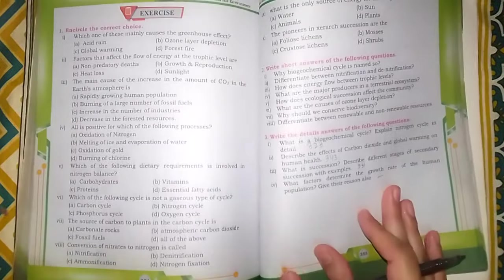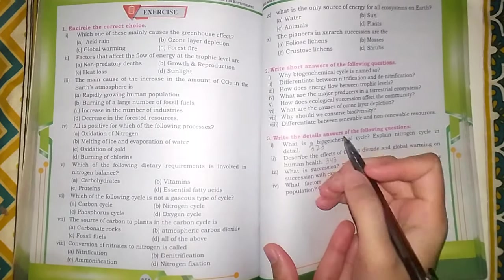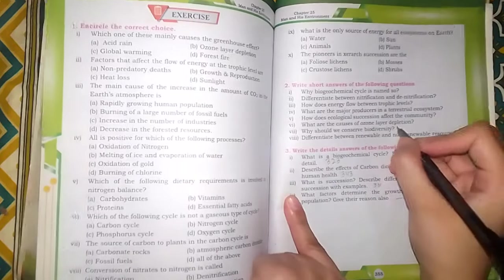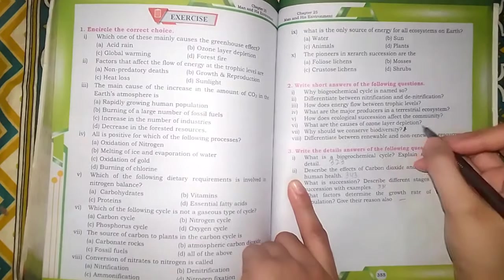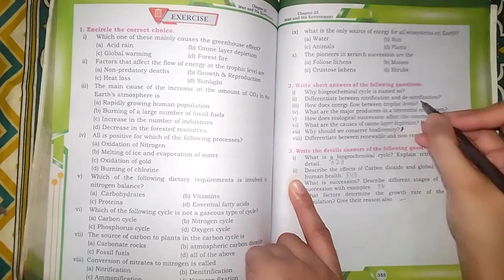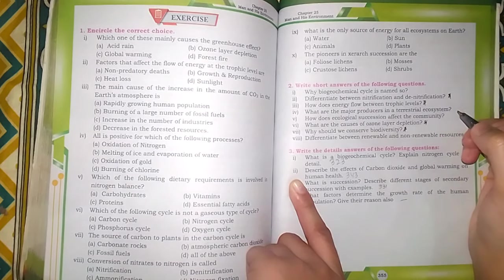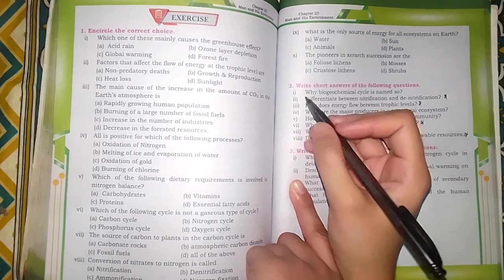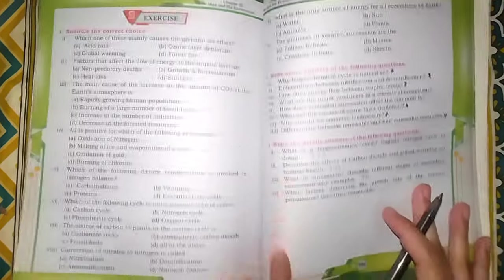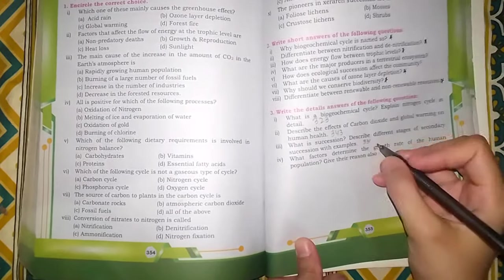Chapter 25, Man and His Environment. There are total 8 questions. You have to do: difference questions, why we conserve biodiversity, causes of ozone layer depletion, energy flow between the tropic levels, differentiate between nitrification and denitrification, and why biogeochemical cycle is named so. This is also a reason so you have to do it.